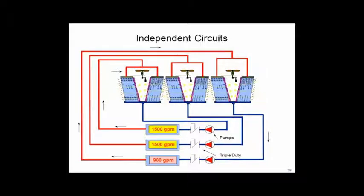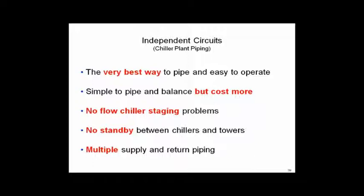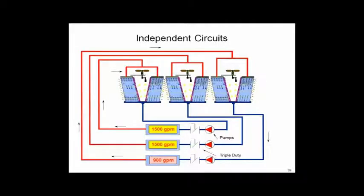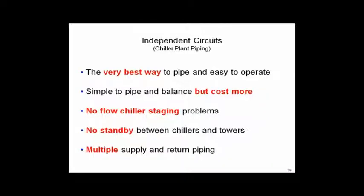Summary of independent circuits: it could be the very best way to pipe and easiest to operate. Staging is simple — with the 900-GPM chiller in winter, just turn it on and turn the other two off. Flow rate is fixed, no min/max flow worries, simple to pipe and balance. However, first cost is higher, there's no standby, and you have multiple separate pipe runs to the cooling towers. In practice, it's rarely used, but there's nothing wrong with it.